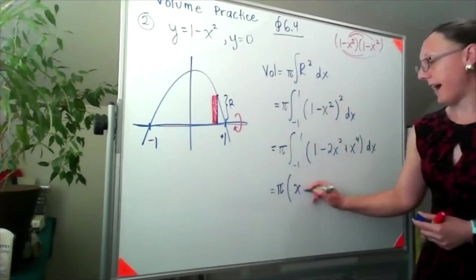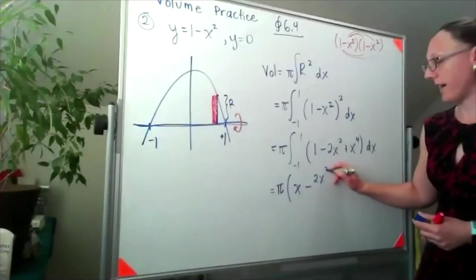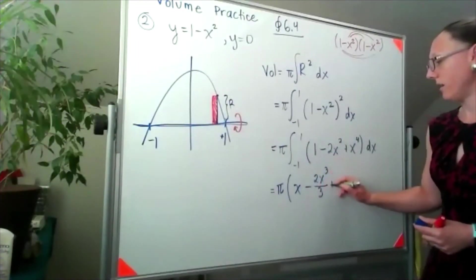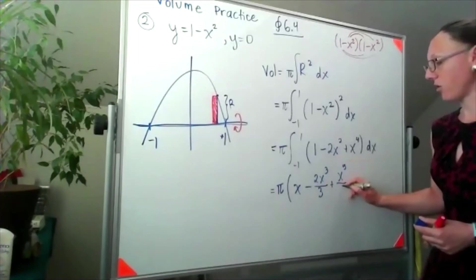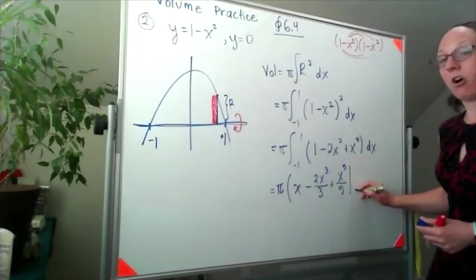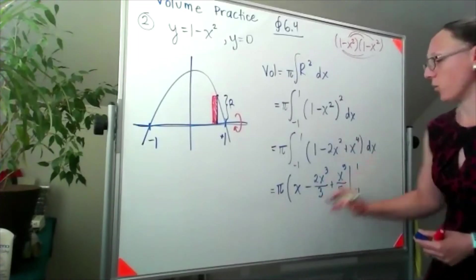Integrating this, I'd get x minus 2x cubed over 3 plus x to the fifth over 5, and then we're going from negative 1 to 1.